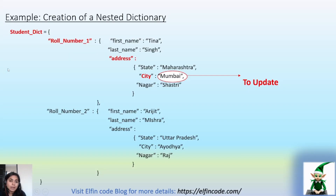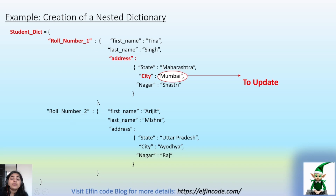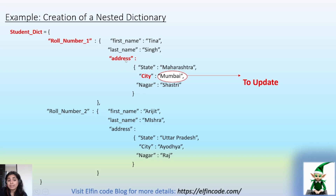Here we are taking a simple example of a nested dictionary, which is a student dictionary. Inside the student dictionary we have two role numbers: role number one and role number two. Inside role number one we have details of that specific student such as first name, last name, address, etc. The address is another dictionary which has the keys state, city, and nagar, present inside the role number one dictionary.